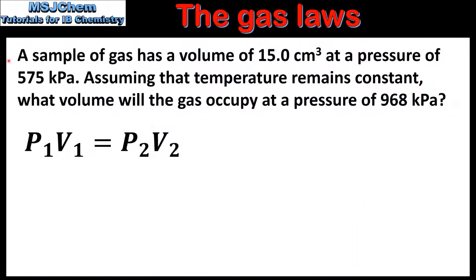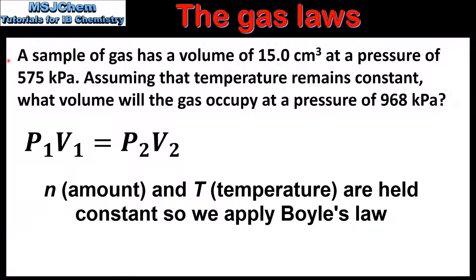In our first example we have a sample of gas with a volume of 15 cubic centimetres at a pressure of 575 kilopascals. Assuming that temperature remains constant, what volume will the gas occupy at a pressure of 968 kilopascals? To solve this problem we'll use the equation P1 times V1 is equal to P2 times V2, which is Boyle's law.